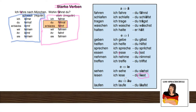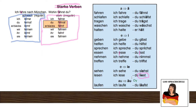Our last category is au becoming äu — when you listen to me say it, it sounds almost like 'oi', like oysters, a little bit. Laufen, to walk — ich laufe, du läufst. Please remember these words and combinations, because you will need them. There is no other way than to practice them, which we will do in a second.